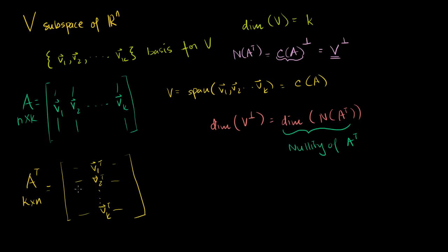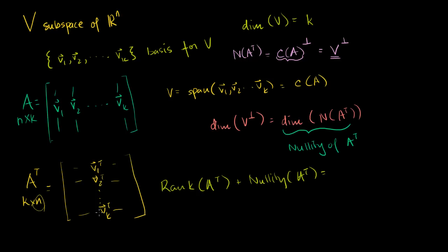We know one key relationship between the rank and nullity of any matrix: they sum to the number of columns. So the rank of A transpose plus the nullity of A transpose equals the number of columns of A transpose, which is n.